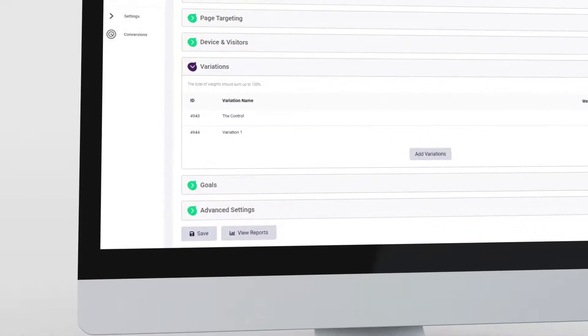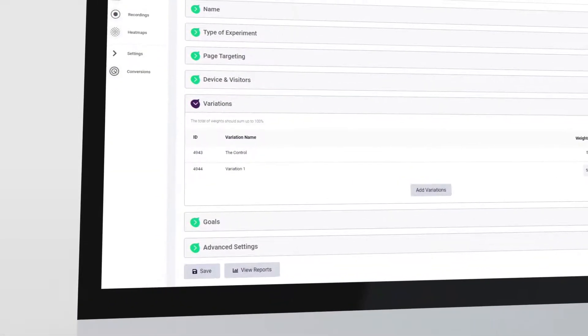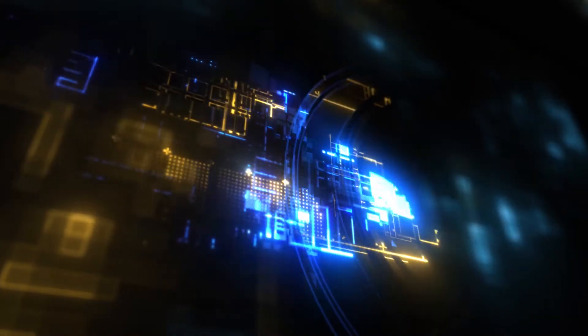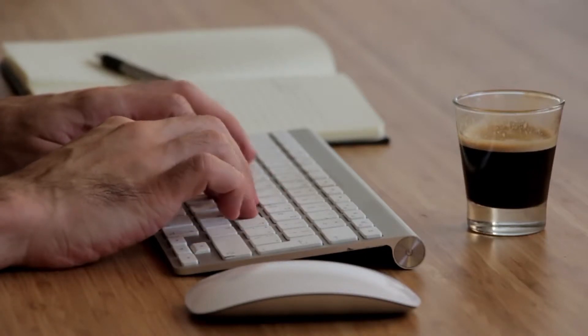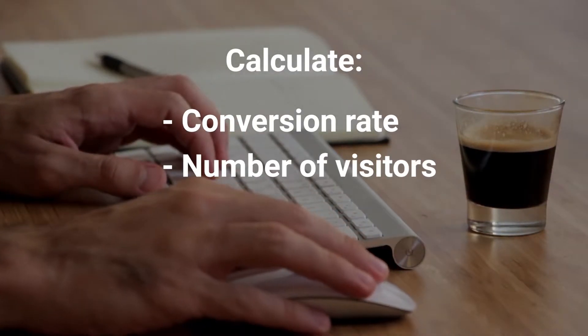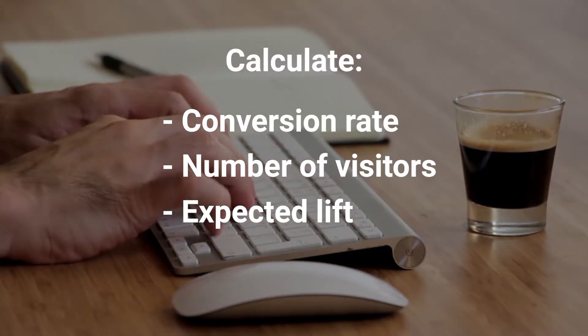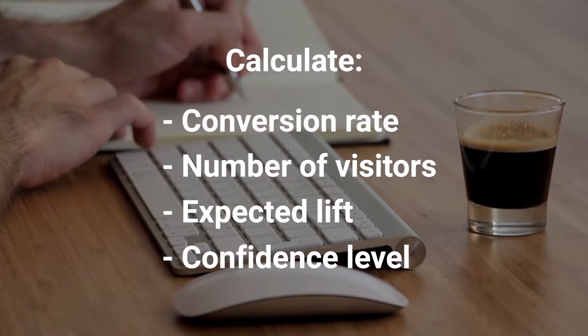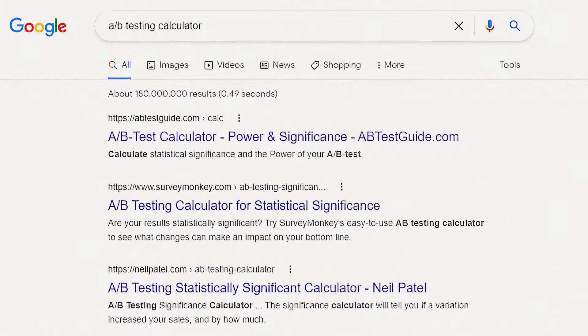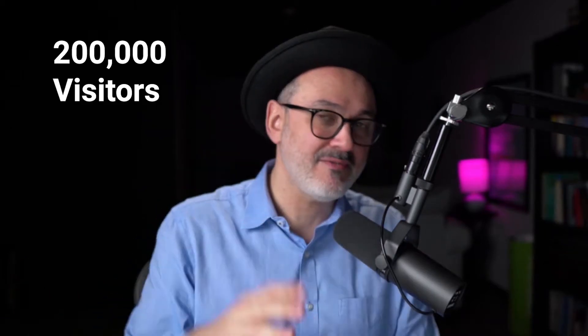Typical A-B testing: you have a control and you have challengers to the control. Let's take a simple case where we have three challengers against a control. Before you run your A-B tests, you're going to do some calculation based on the control conversion rate, number of visitors coming to it, the lift that you expect, the confidence level you want your test data to be at, and use all these in a fairly sophisticated formula — or there are plenty of available calculators online — that will tell you that you need to run this test for 140,000 or 200,000 visitors.